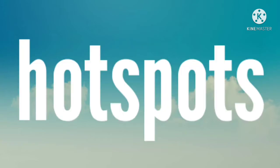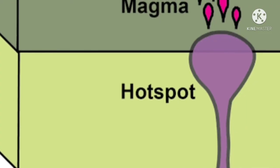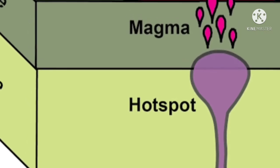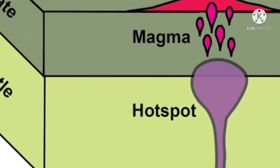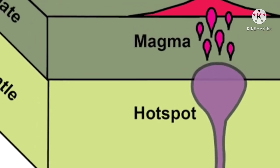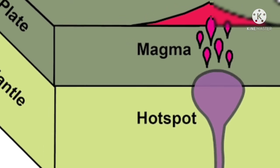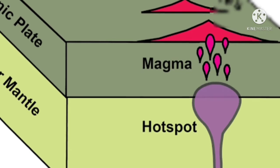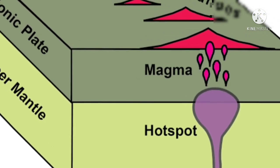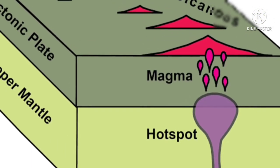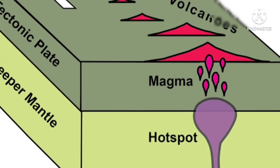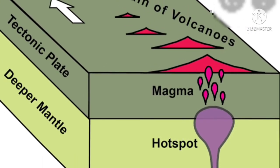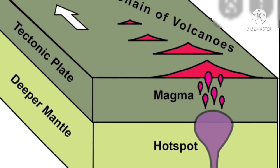Third is the hotspot. A volcanic hotspot is an area in the mantle from which heat rises as a thermal plume from deep in the Earth. High heat and lower pressure at the base of the lithosphere cause melting of the rock. This magma rises through cracks and erupts to form volcanoes.